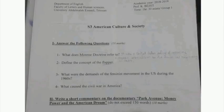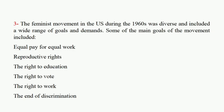Question number three: What were the demands of the feminist movement in the U.S. during the 1960s? The feminist movement in the U.S. during the 1960s was diverse and included a wide range of goals and demands. Some of the main goals included equal pay for equal work, reproductive rights, the right to education, the right to vote, the right to work, and the end of discrimination.